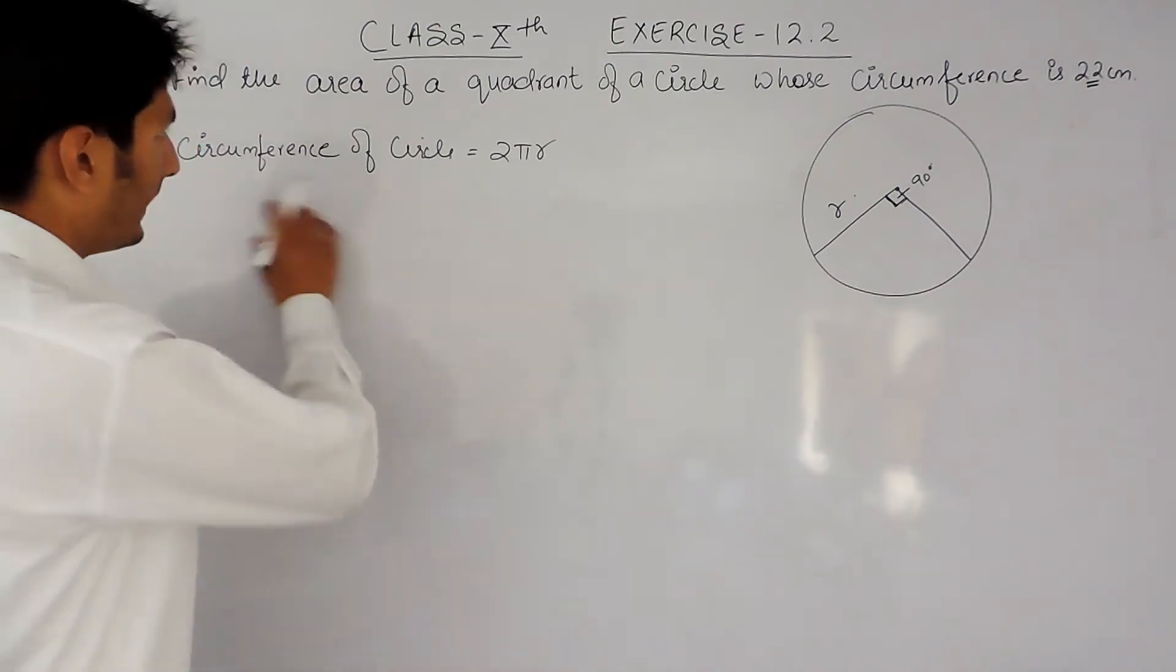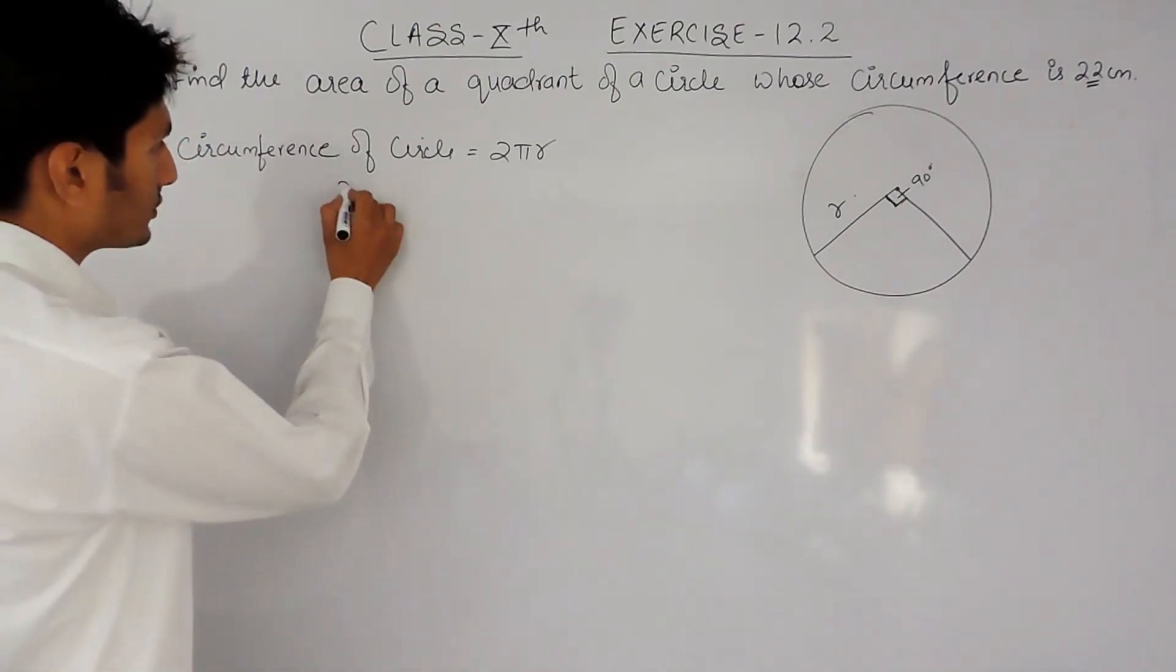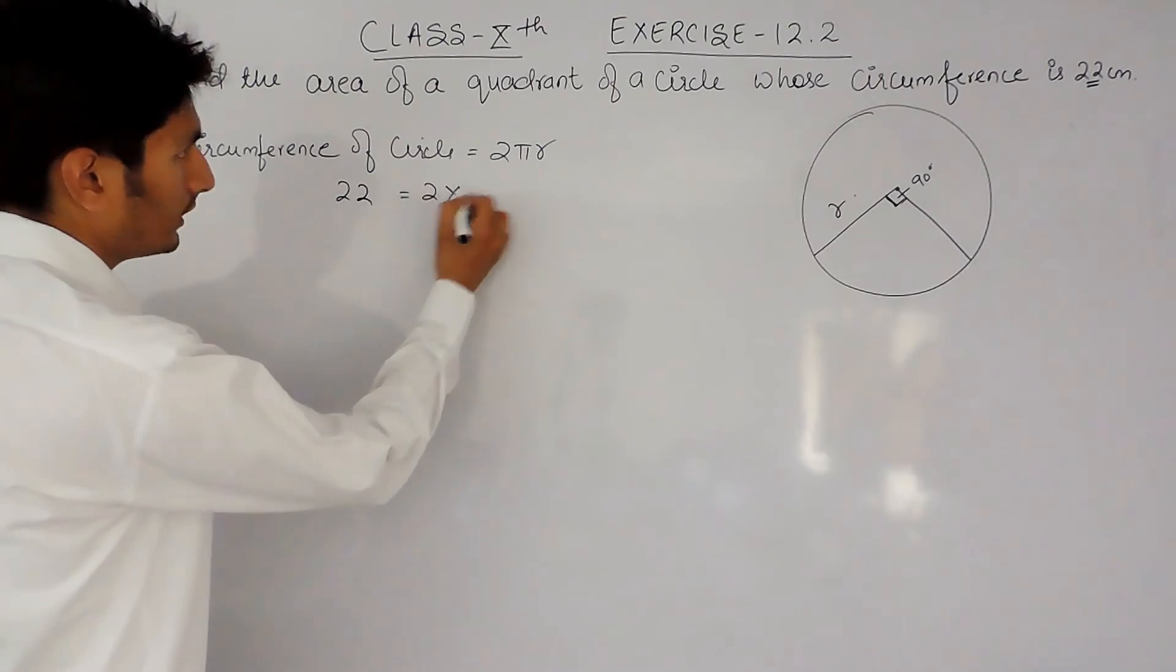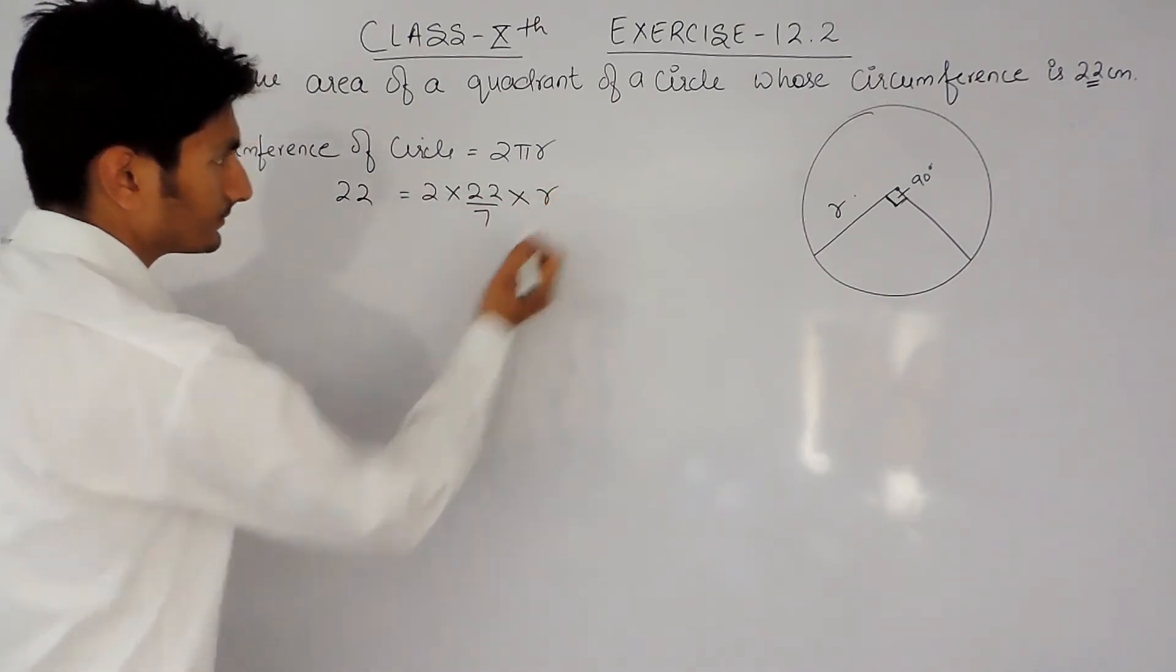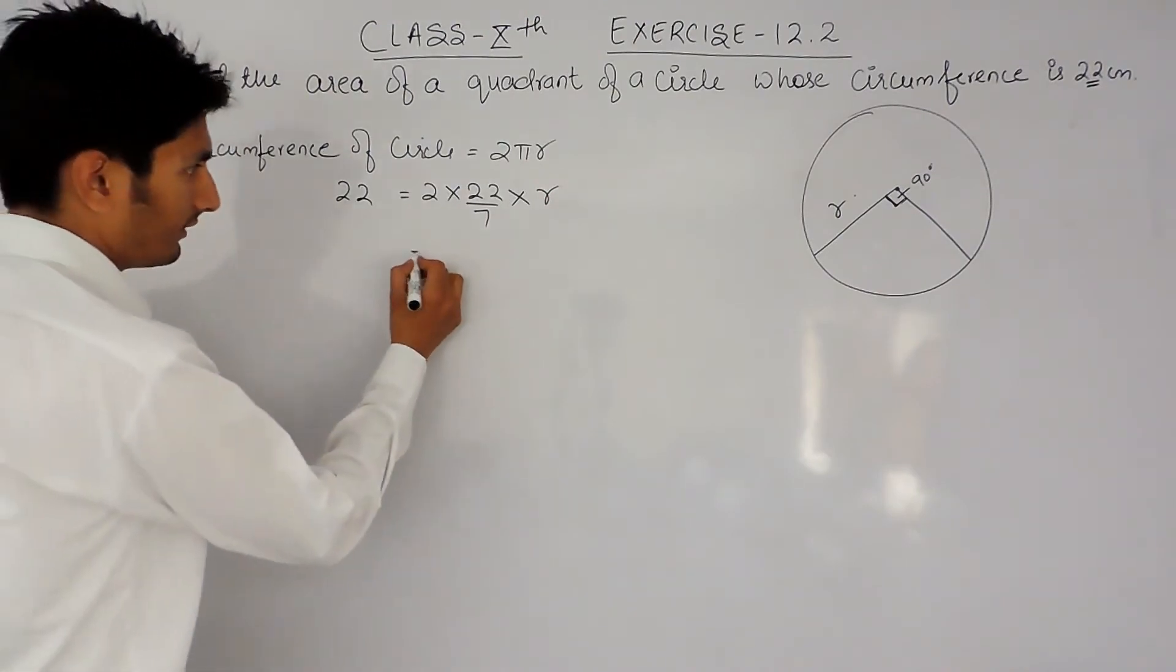And the circumference here given to us as 22 centimeters, so that will equal 2π—the value of π is 22/7—times r.